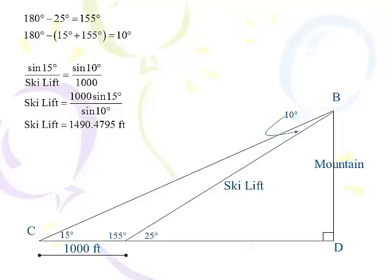So, don't round off when you go to the second part. Leave that 1,490.4795 in your calculator. So, we got the ski lift figured out.